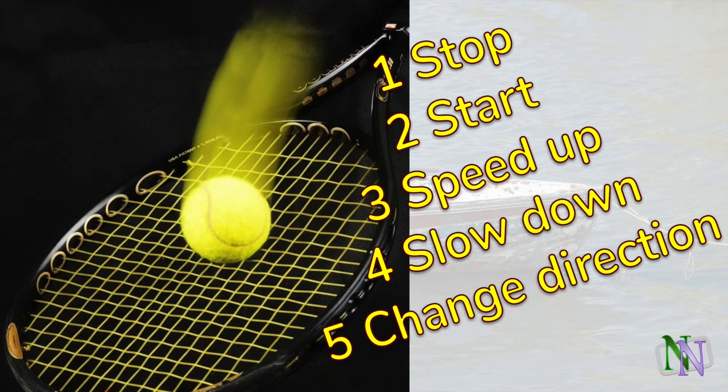So forces cause acceleration, which means they can have the following effects on a moving body: stopping it, starting it moving, speeding it up, slowing it down, or changing its direction. The last one is a reminder of the vector nature of a force. A tennis racket could exert any of these effects on the ball.